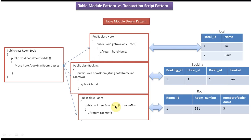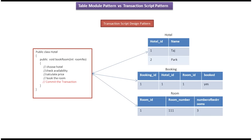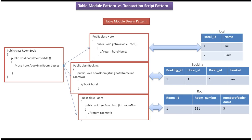You can see the difference: in Transaction Script, a single class communicates to all the tables and handles hotel room booking, whereas in Table Model, for each table one class is defined. That is the core difference between the Table Model design pattern and the Transaction Script design pattern. Thanks for watching, bye.